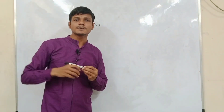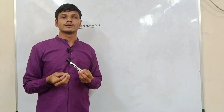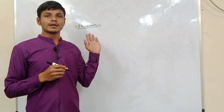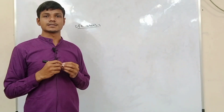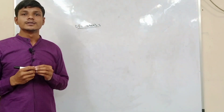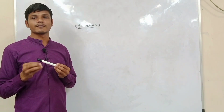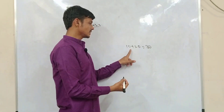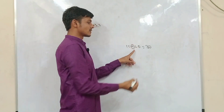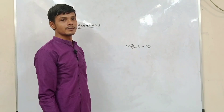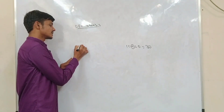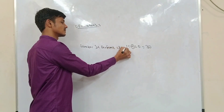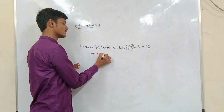So what is meant by an operator? An operator is a symbol that performs a specific task. For example, 10 plus 20: here the plus symbol is the operator. It is a type of symbol performing a specific task. Different types include arithmetic operators, increment and decrement operators, and more.